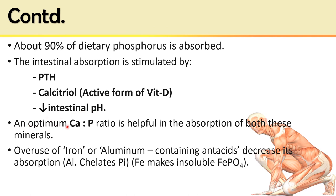An optimum calcium-to-phosphorus ratio in the diet is helpful for absorption of both minerals — if calcium in the diet is low, absorption of phosphorus is also low. Overuse of iron- or aluminum-containing antacids decreases absorption of phosphorus; aluminum chelates with inorganic phosphate, while iron forms insoluble ferric phosphate salts.